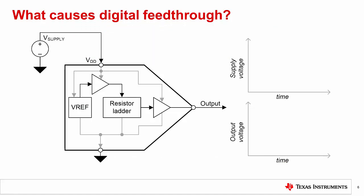Another path where digital noise can be fed through the DAC is the power supply pins. Systems where the power supply is shared between the digital source and the DAC, or where digital lines are routed near the analog supply, can have greater digital noise or glitches on the power supply pin. Since many components within the DAC — such as the output buffer, reference, and reference buffer — all have limited power supply rejection, it is possible for supply transients or noise to appear on the output, though usually at a lower magnitude. This behavior can be quantified by looking at the power supply rejection ratio, which is specified on some DACs.